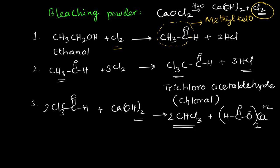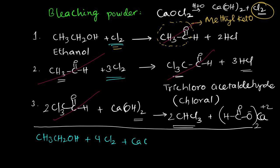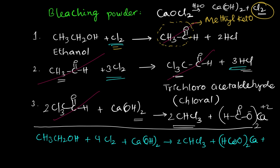This gives 2 moles of chloroform. According to the net reaction, cancelling intermediates: the left side is CH₃CH₂OH plus 3 moles of Cl₂ and 1 mole of Cl₂ — totally 4 moles of chlorine — plus calcium hydroxide, giving 2 moles of chloroform plus calcium formate, plus totally 5 moles of HCl. If asked how many moles of halogen are used when alcohol converts to chloroform: 4 moles. From the aldehyde step onwards, only 3 moles are utilized.